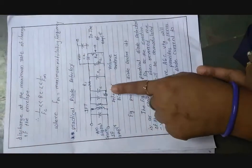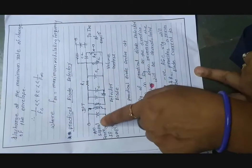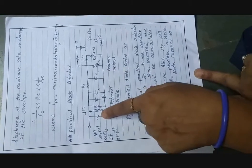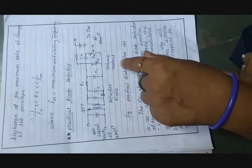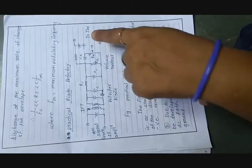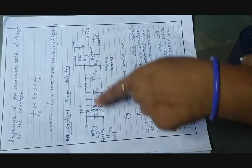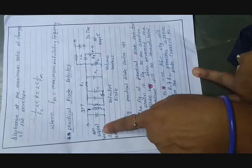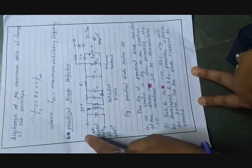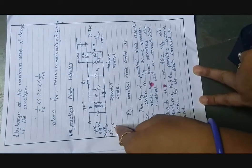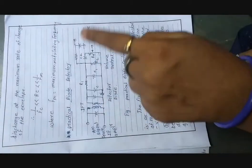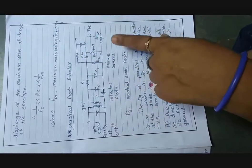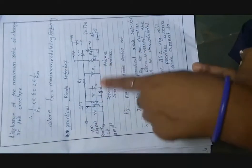Here is the circuit diagram of the practical diode detector. In this circuit, three or four coupling capacitors are connected. A volume control knob is used to control the volume of the AM signal, as well as the audio frequency amplifier output introduced by the practical diode detector. These are connected towards the audio frequency amplifier circuit. The input given is an AM signal in the form of an intermediate frequency amplifier, which produces an error-free demodulated output.